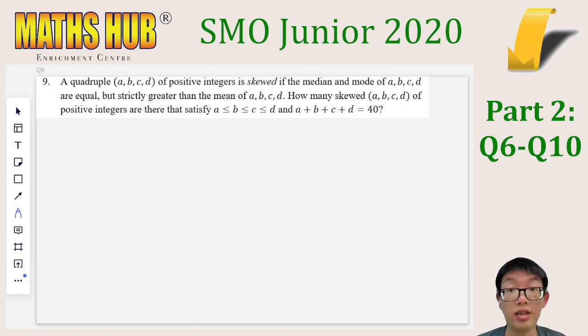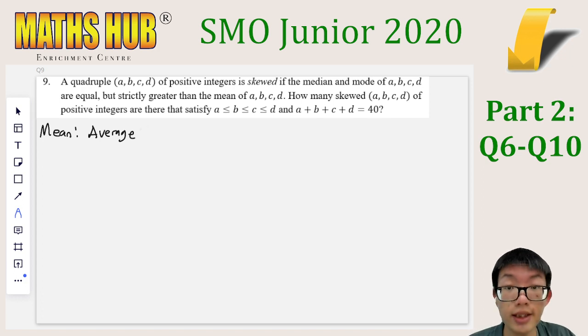Next up, question 9 talks about quadruples of positive integers, and says that they are skewed if the median and mode are equal, and both of these are greater than the mean. What we are asked to find is how many skewed quadruples are there in non-decreasing order, such that their sum is equal to 40. Before we do anything, let's recap what it means for us to have the mean, median, and mode of a list of numbers. The mean is just the average. In this case, the average is just 40 divided by 4, which is 10.